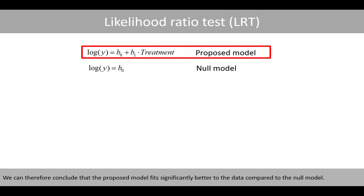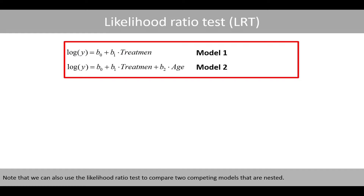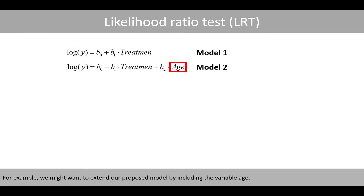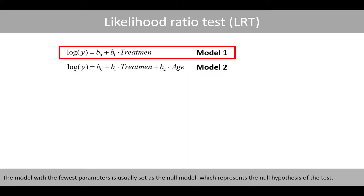We can therefore conclude that the proposed model fits significantly better to the data compared to the null model. In other words, adding the variable treatment to the null model significantly improves the model. Note that we can also use the likelihood ratio test to compare two competing nested models. For example, we might want to extend our proposed model by including the variable age, and use a likelihood ratio test to compare the two models with or without the variable age. The model with fewer parameters is usually set as the null model, representing the null hypothesis of the test.